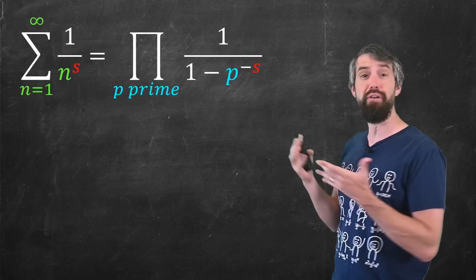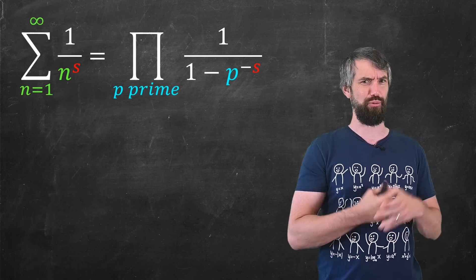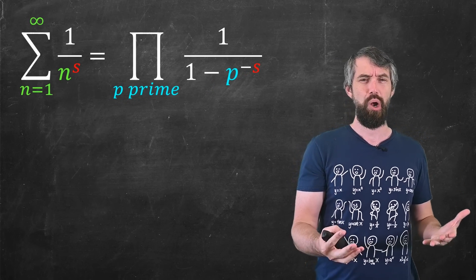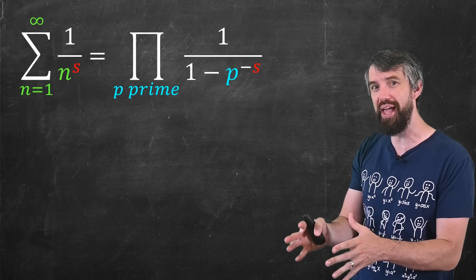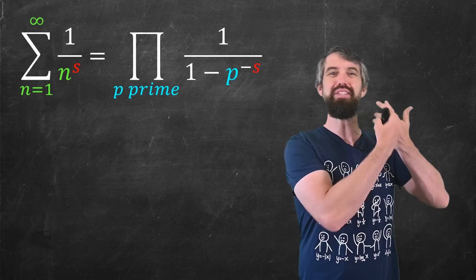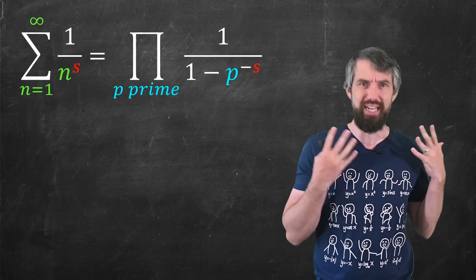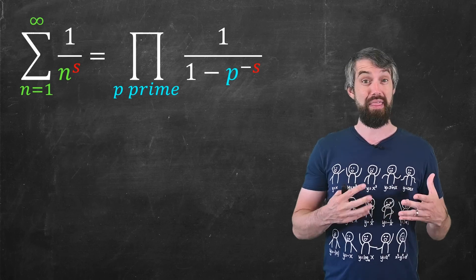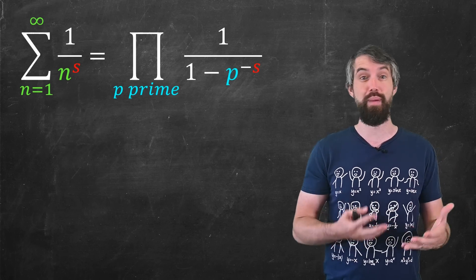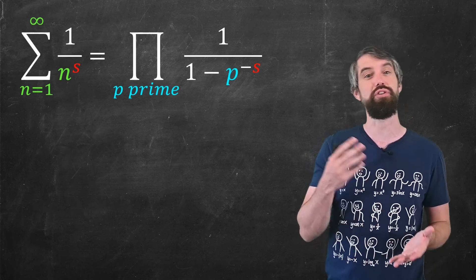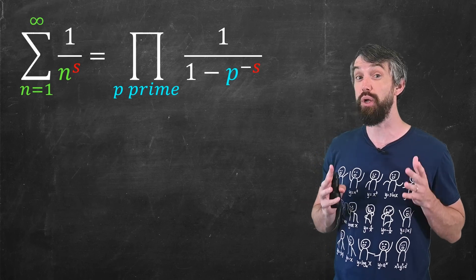And so you get terms like 1 over 1 minus 2 to the minus s, 1 over 1 minus 3 to the minus s, and so forth. So the first reason that I really love this formula so much is just that it's really surprising. Why would a product of terms only dealing with primes be related to a sum of terms that are now dealing with all of the numbers? That seems very strange. And that this strange relationship comes out with only very basic mathematical operations makes it even more surprising.